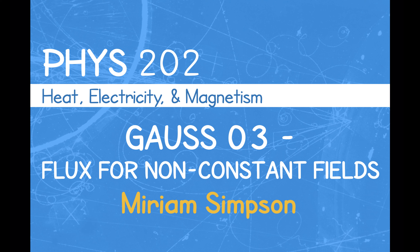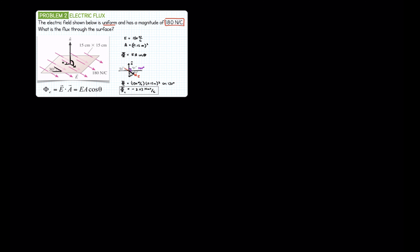So far when we've been talking about electric flux, we've been assuming that the electric field is constant. We're using an electric flux model that says we have just the dot product of the electric field and the area. Now we know from looking at different electric field configurations, the electric field is not always constant. The last problem we did had a constant, uniform electric field. The only time we really have a uniform electric field is for a capacitor.